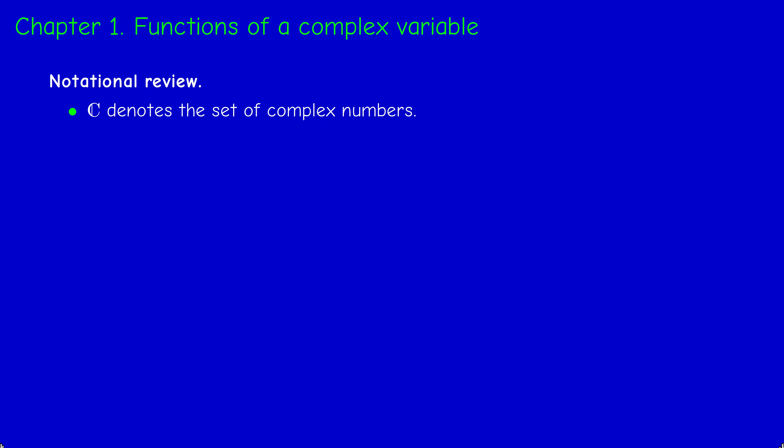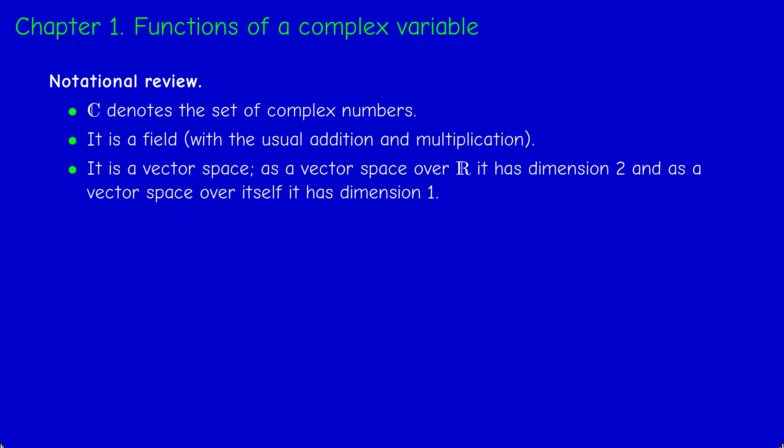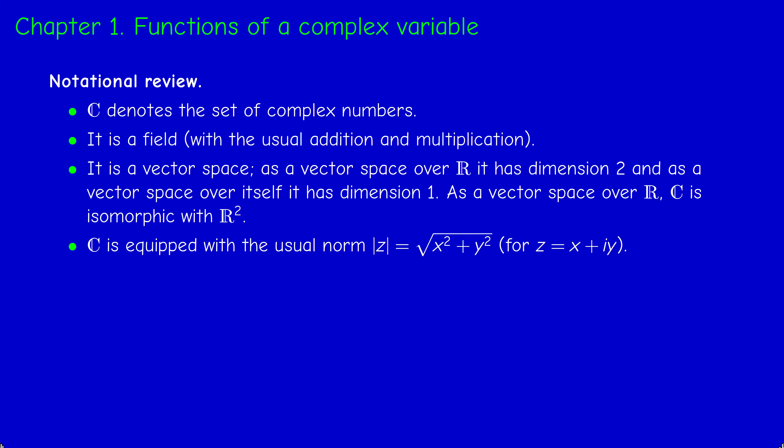The set of complex numbers, denoted by C, is a field — it has an addition and a multiplication. It's also a vector space over R, and as a vector space over R it has dimension 2, because C is isomorphic to the plane R². Of course it's also a vector space over itself, with dimension 1. A complex number can be thought of as a couple: it is of the form x + iy, so it's a couple (x, y). The modulus of a complex number is the Euclidean norm of the couple (x, y).